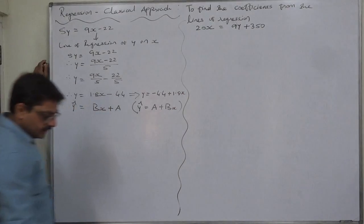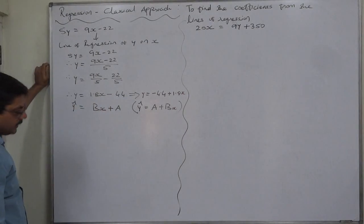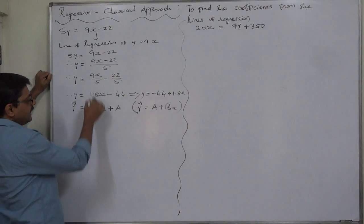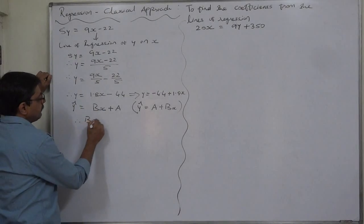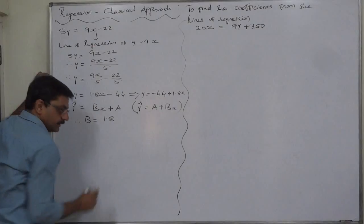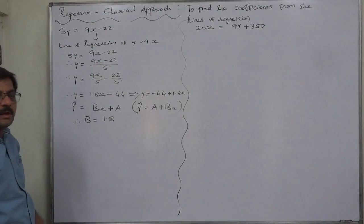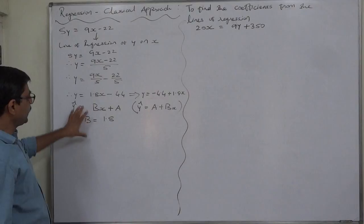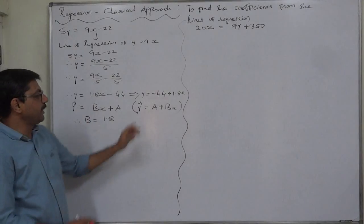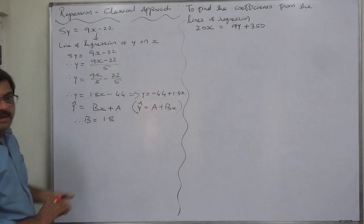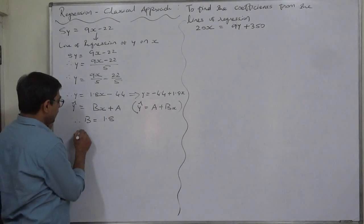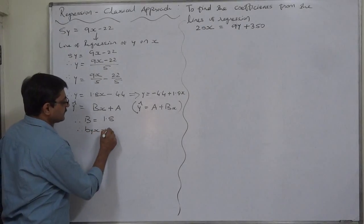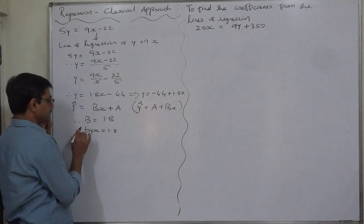By comparing, we find that b is 1.8. In the case of the line of regression of y on x, b stands for byx. So we can conclude that byx = 1.8.